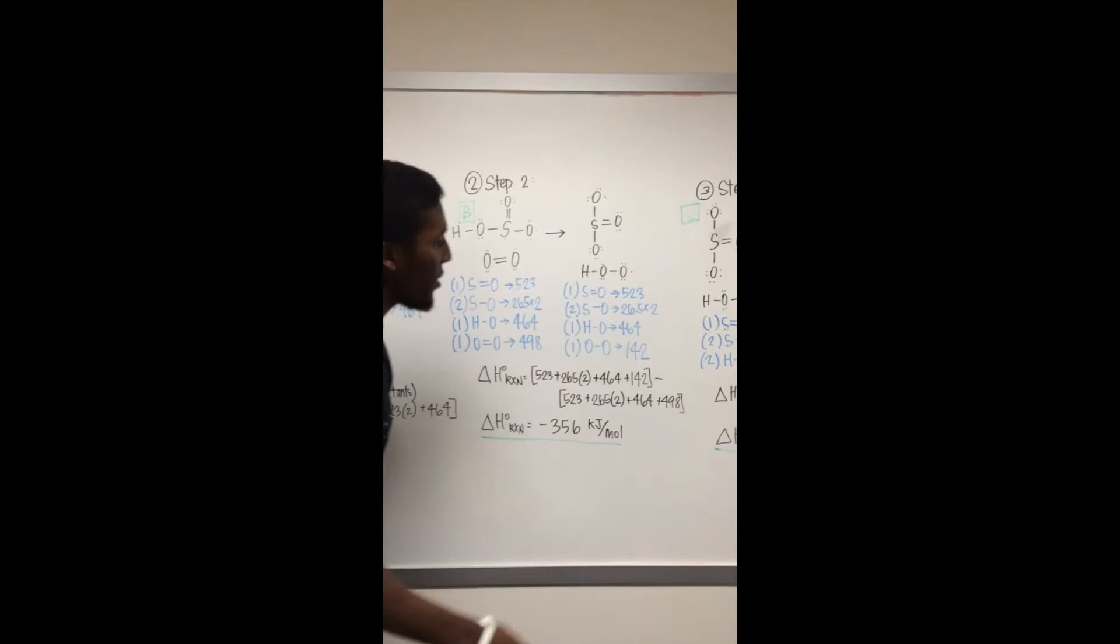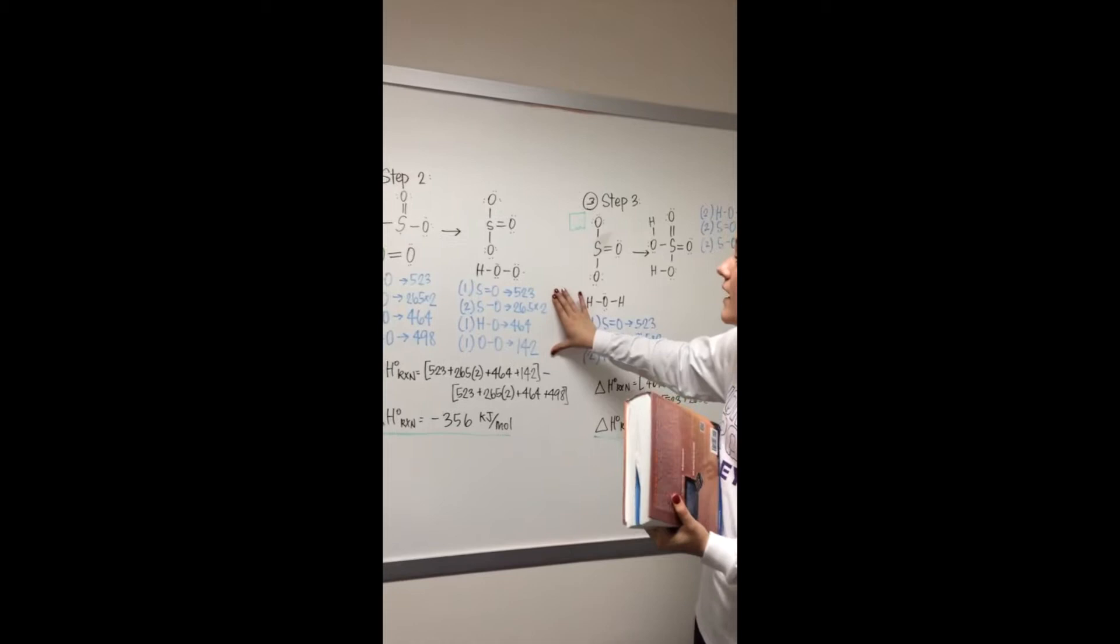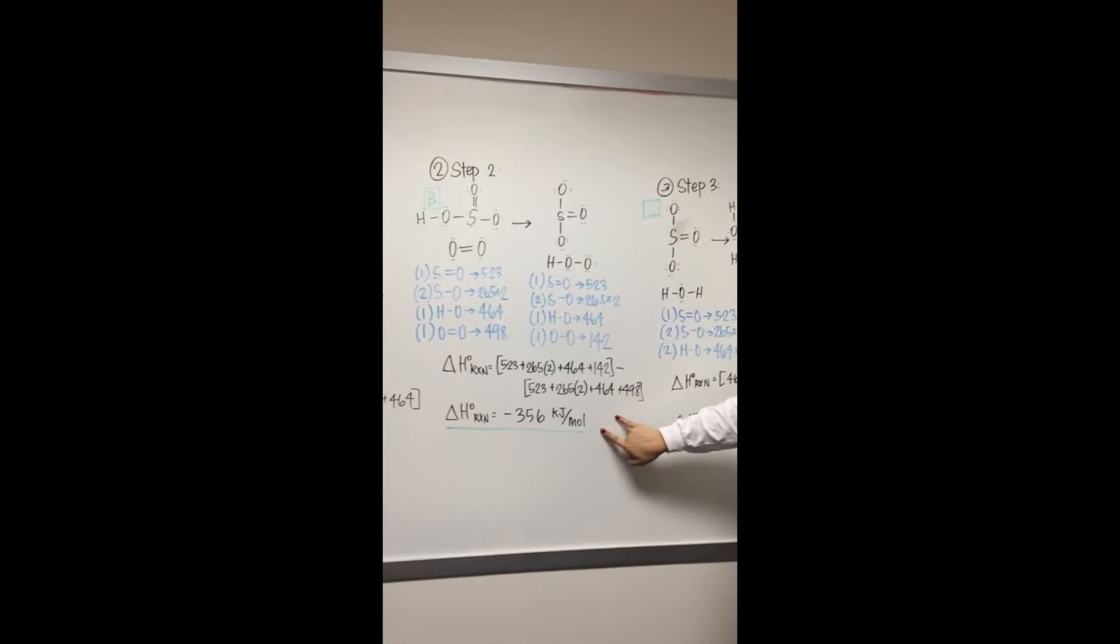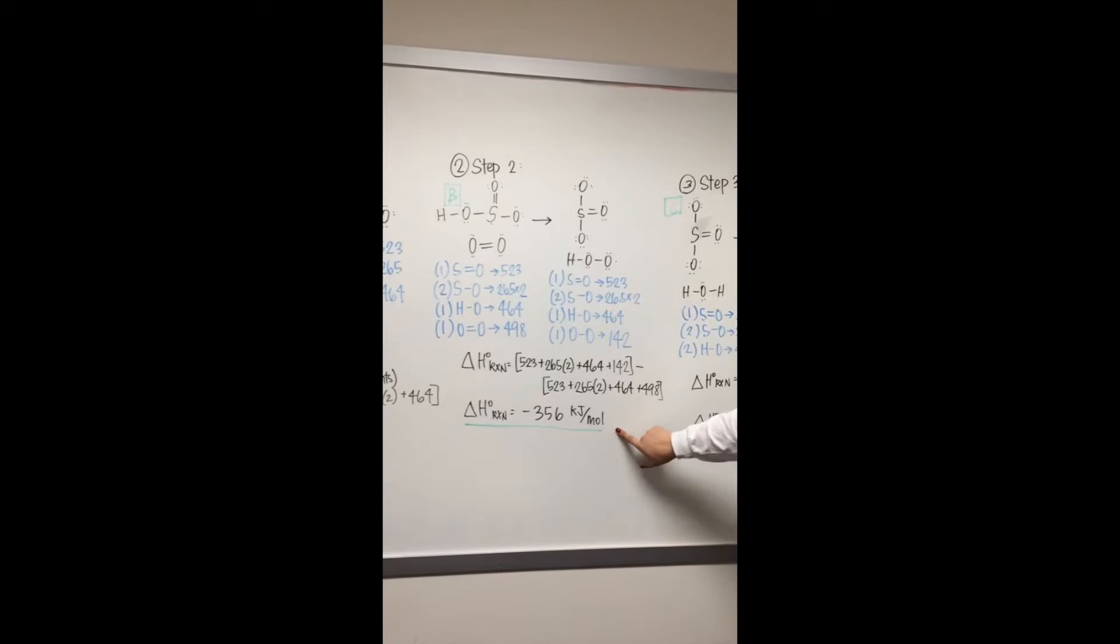Again, we're going to use the bond energies and do the same steps that we just completed in step one. This will give you almost the exact same numbers depending on what the equation said. We're going to solve again for the enthalpy change in reaction doing the products minus the reactants to get negative 356.